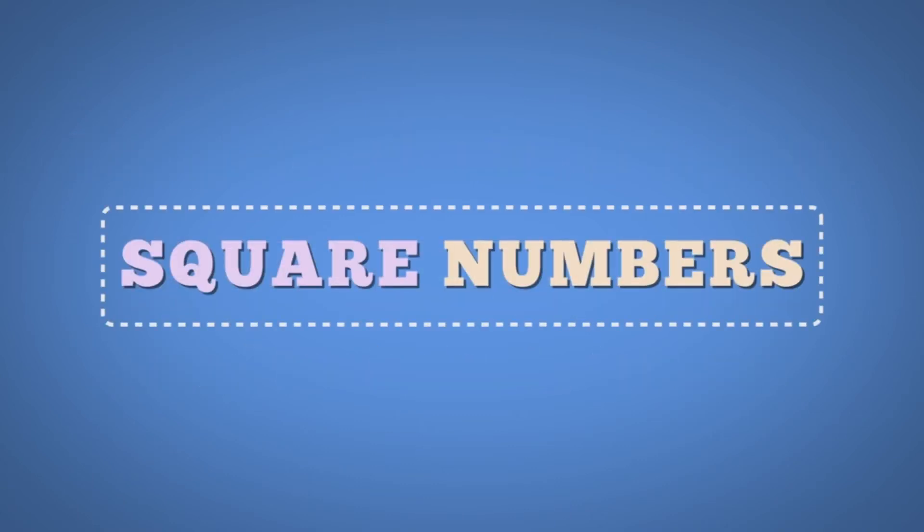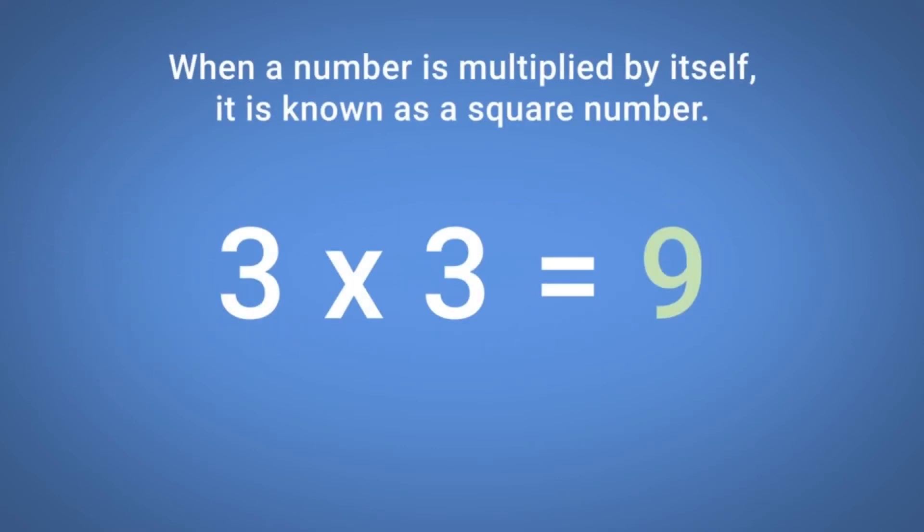Square numbers. When a number is multiplied by itself, it is known as a square number.